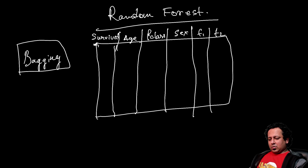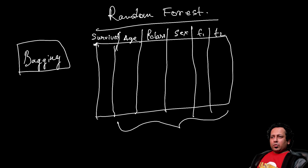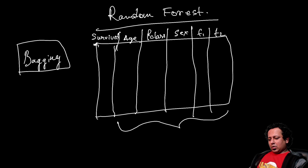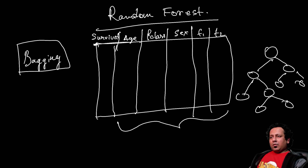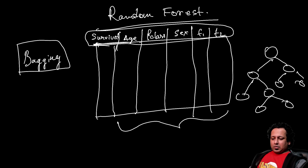Here is our Titanic dataset, and the idea is to use these features to predict who survived. In the previous video about decision trees, we used these features to create a tree that helps us predict who survived and who didn't, starting with all the features and the full dataset.